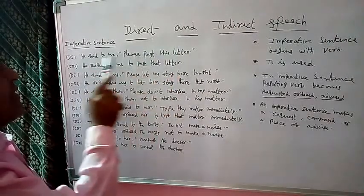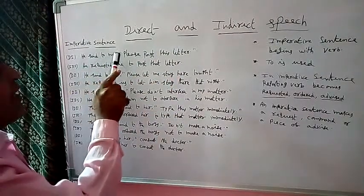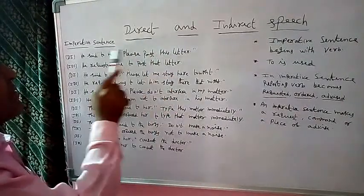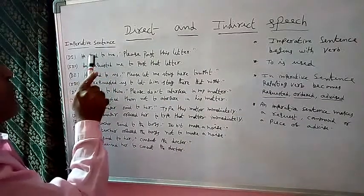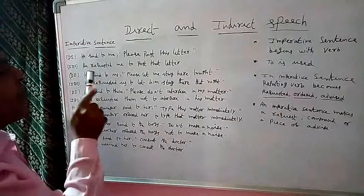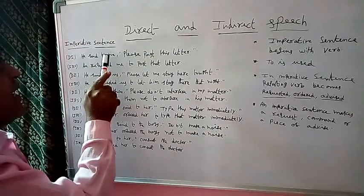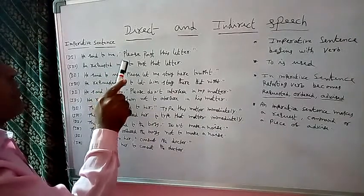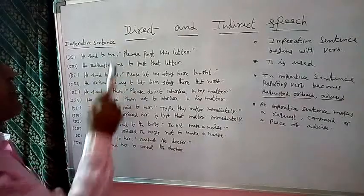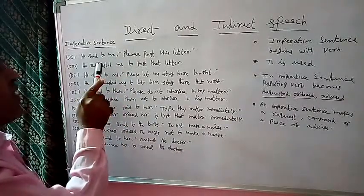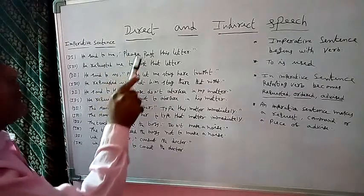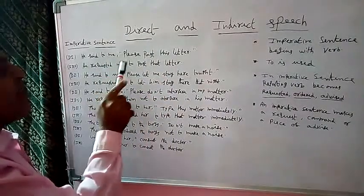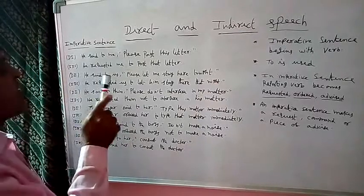The meaning of the sentence is a request, so the reporting verb 'said to' becomes 'requested' in an imperative sentence. The object is 'me', and the same object must be written in indirect speech. In indirect speech, 'to' is used instead of a comma. Don't write 'please'. 'This' changes to 'that'. The indirect speech is: He requested me to post that letter.